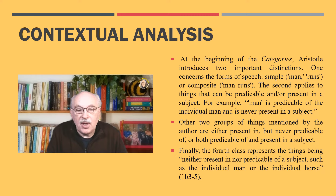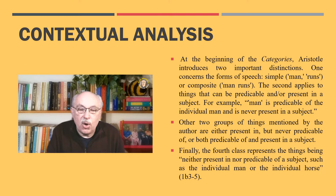Two other groups of things are either present in but never predicable of a subject, or both predicable of and present in a subject. Finally, the fourth class represents things being, I quote, 'neither present in nor predicable of a subject, such as the individual man or the individual horse.'